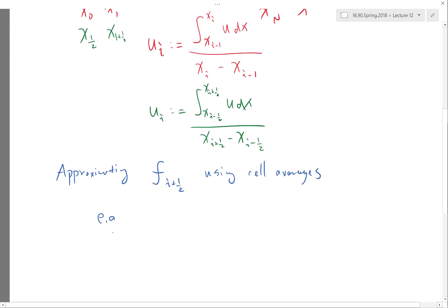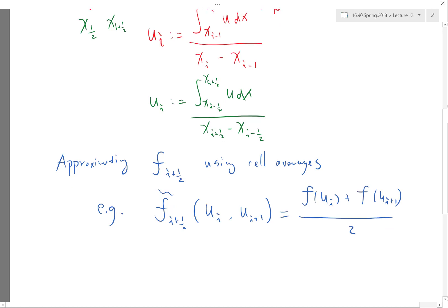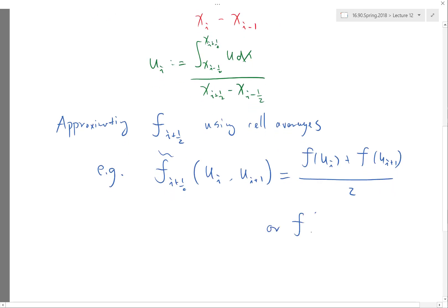So, for example, if I want to approximate this as a function of ui and ui plus 1, these are the two cell averages, right? So if I have a formula saying that this is equal to half of f of ui plus f of ui plus 1, that's an approximation, right? Or if I can approximate it as f of half of ui plus ui plus 1, that's actually a different approximation, right? Because f in general is a nonlinear function, right? So this is what finite volume does, okay?